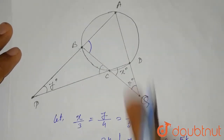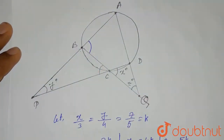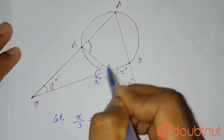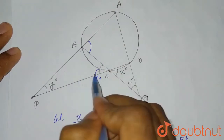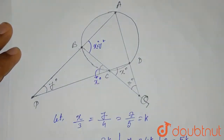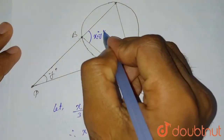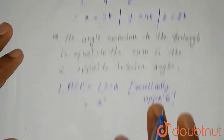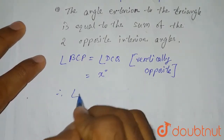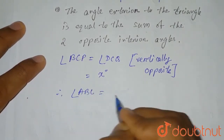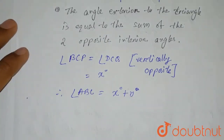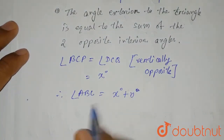Using the exterior angle property, angle ABC = x degrees + y degrees.